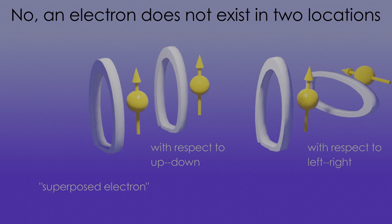Superposition is not a property of the electron. Instead, it mathematically describes the relationship between the electron state and some detector.